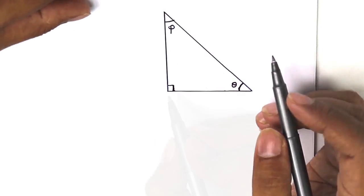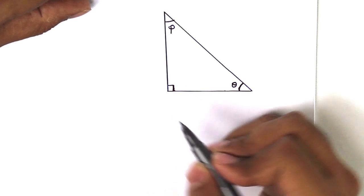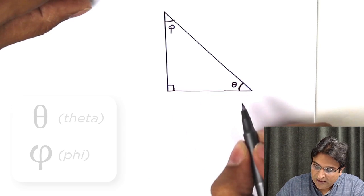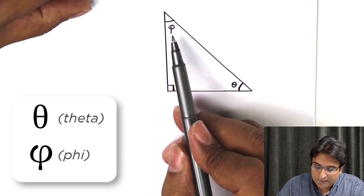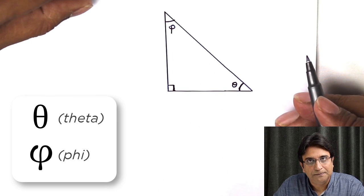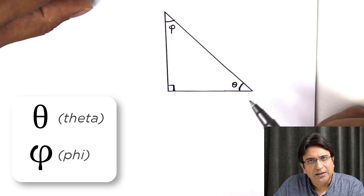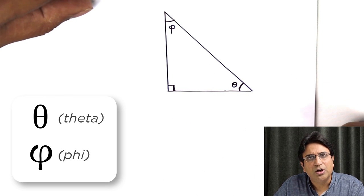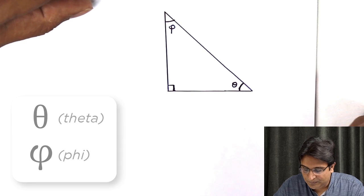So, let's say this is the right angle triangle. This is the right angle. This angle I've called theta and the third angle I've called phi. Theta and phi are just symbols just like you have A, B, C or X, Y, Z. Alright?